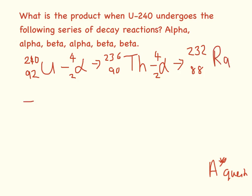We've done alpha, we've done alpha. Now we have beta decay. So 232 minus 0 is 232. 88 minus minus 1 is 89. And 89 is actinium.